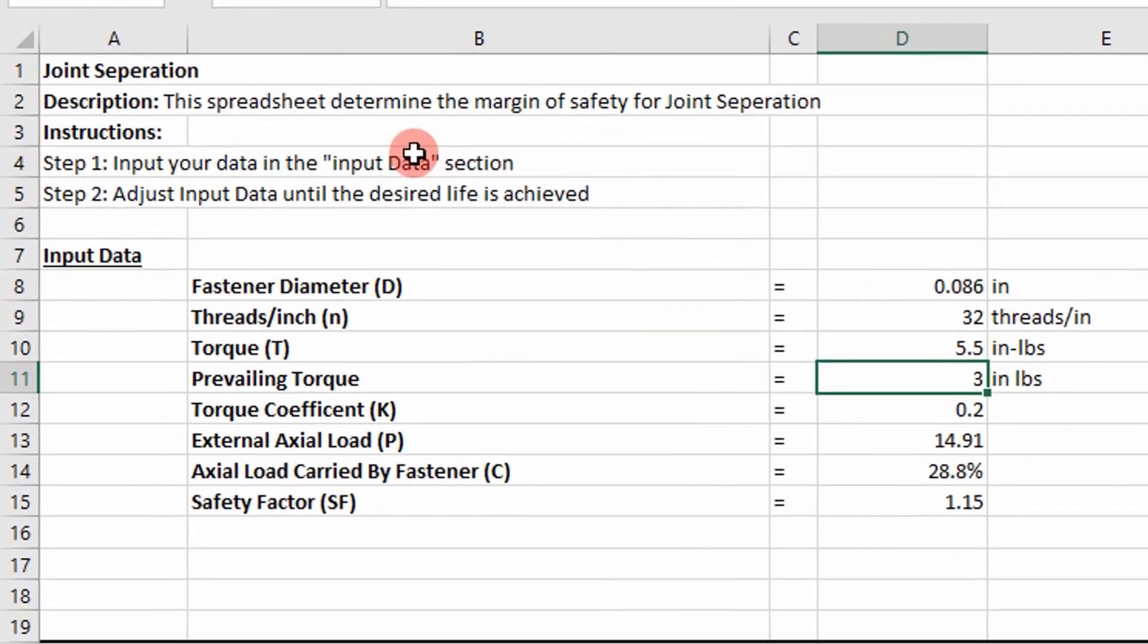So the inputs you're going to need to evaluate joint separation include fastener diameter, threads per inch, the torque applied to the bolt, the prevailing torque, which is essentially the torque required to overcome the friction between the threads as you torque a bolt down. So this is the torque that you're going to get that's not going to produce any clamping force or externally elongate the bolt.